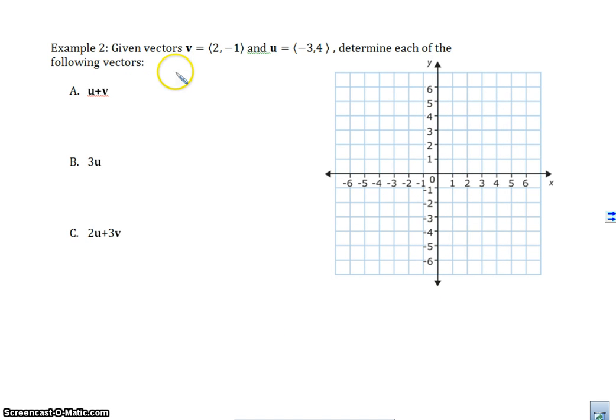All right, let's look at another one. Given vectors v, 2, negative 1, and u, negative 3, 4, determine each of the following vectors. So I have two vectors, and if I'm adding these two vectors, 2, negative 1 in standard position looks like this. And negative 3, 4 in standard position looks like this.